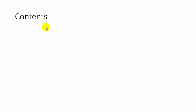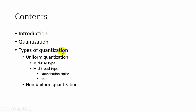In this video we are going to discuss about quantization. The contents include introduction to quantization, process of quantization, and types of quantization. Types of quantization includes uniform quantization and non-uniform quantization. In uniform quantization we are going to see about mid-rise type and mid-tread type. Next we are going to discuss about quantization noise and signal to noise ratio parameters.